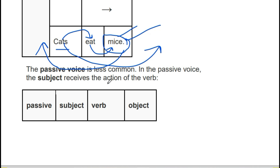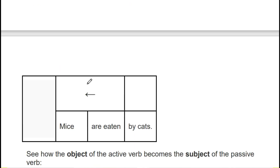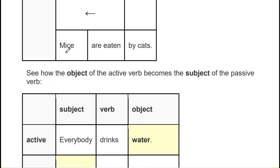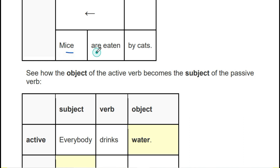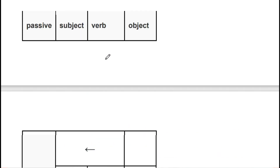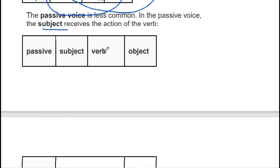So here, 'Mice are eaten by cats.' Mice are receiving the action of the verb. You can see: subject, verb, object — the subject is receiving the action.